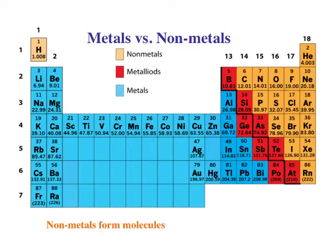It is non-metals that are forming molecules, and the non-metals that form diatomic molecules are hydrogen over here, nitrogen, oxygen, and fluorine, and then the halogens in group 17.